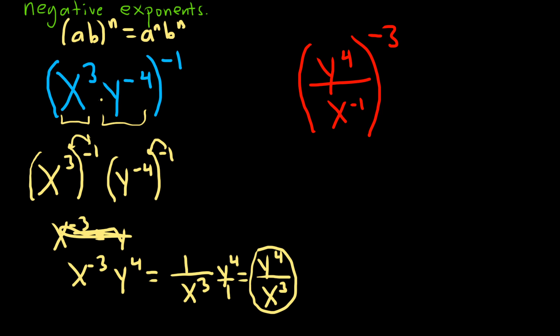For this next one, same thing. We're going to use a rule that says if you have a over b to the n, this is the same thing as a to the n over b to the n. So in this case here, it will be y to the 4 to the negative 3 over x to the negative 1 to the negative 3.